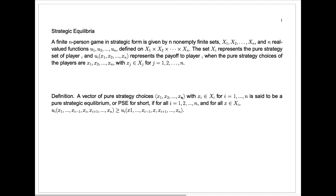The payout to each player i with those choices x1 through xn is greater than or equal to what the payout would be to player i if player i changed the choice from x sub i — the choice at this equilibrium — to any other x in player i's set of choices. In other words, player i cannot do better by switching choices. If that's true for every player i equals 1 to n, then we're at a pure strategic equilibrium.